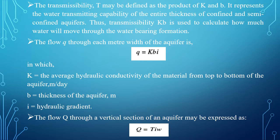The flow through each meter width of the aquifer is represented by the formula q equals K into B into I. Here, K is the average hydraulic conductivity of the material from top to bottom layer of the aquifer, with units of meters per day. B is the thickness of the aquifer in meters. I is the hydraulic gradient, and in the case of transmissibility, it is considered as 1.